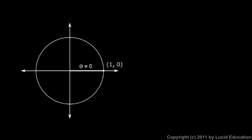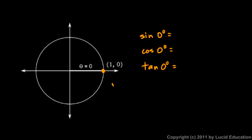Let's look through them. We'll start at 0 degrees. The point in question is the point (1, 0). The sine is the y-coordinate, which is 0. The cosine is the x-coordinate, which is 1. The tangent will always be y divided by x, so in this case it's 0 divided by 1, so the tangent of 0 degrees is 0.